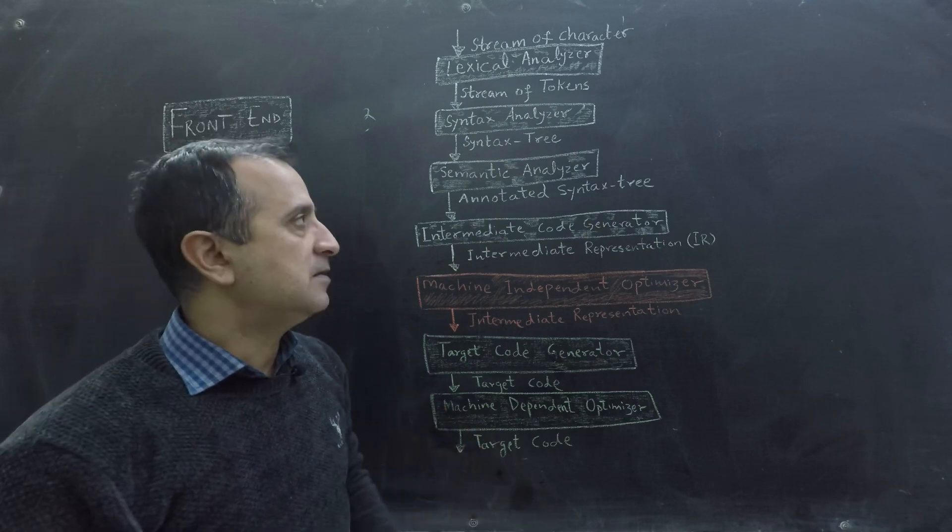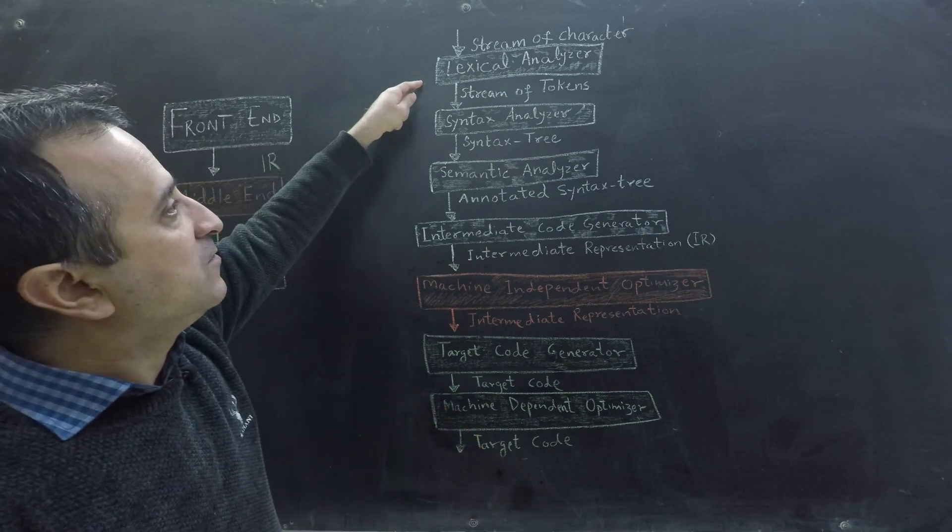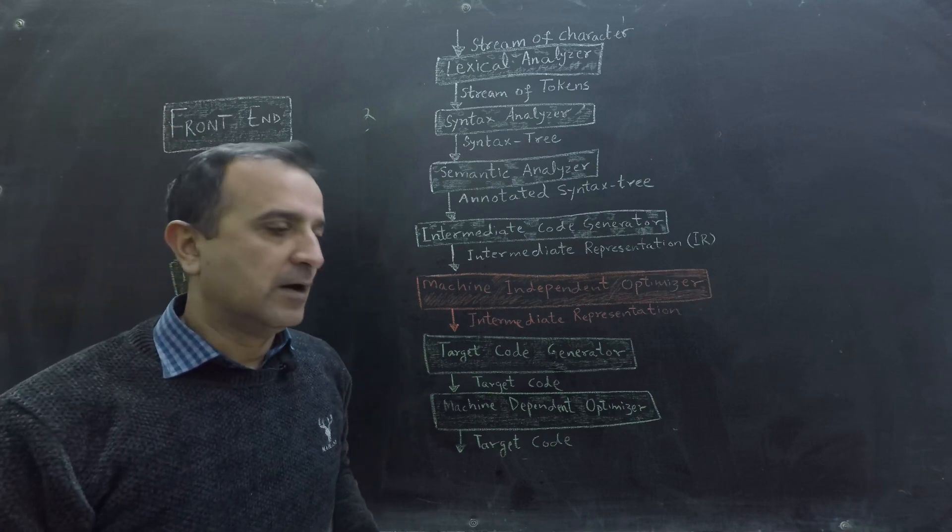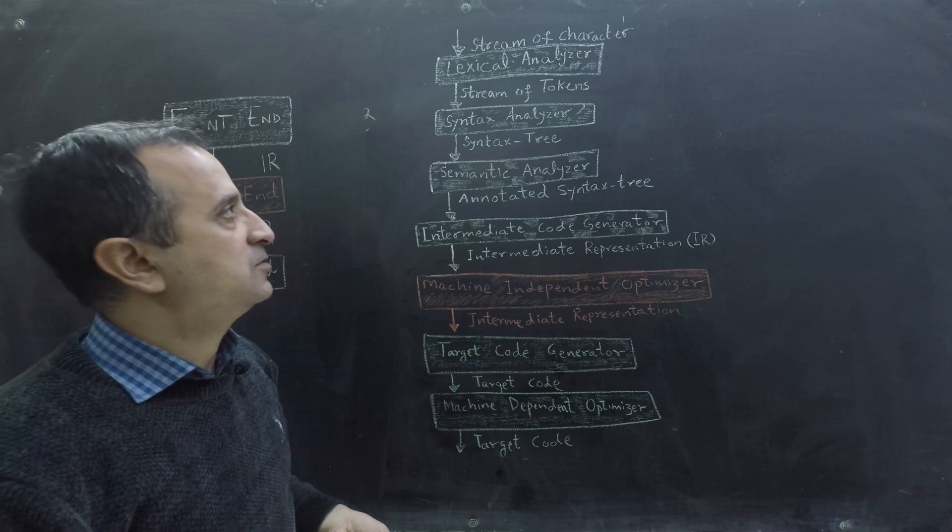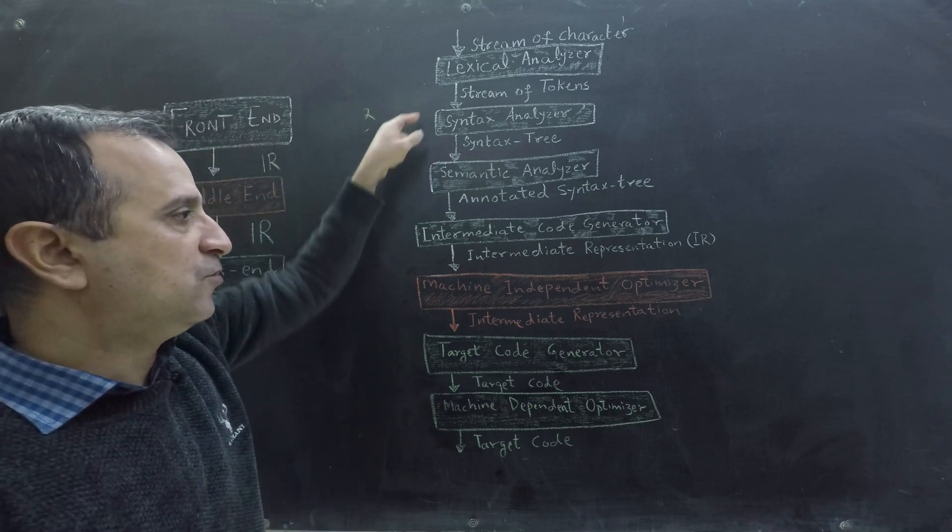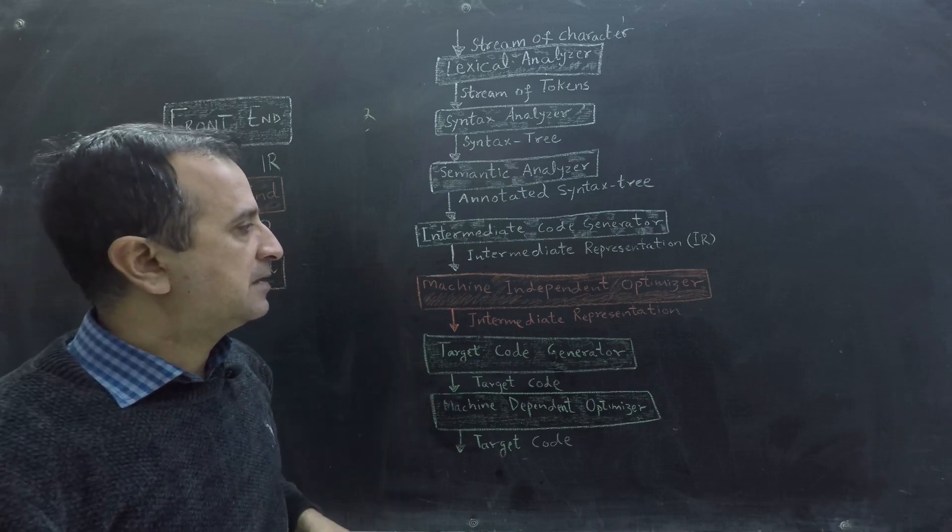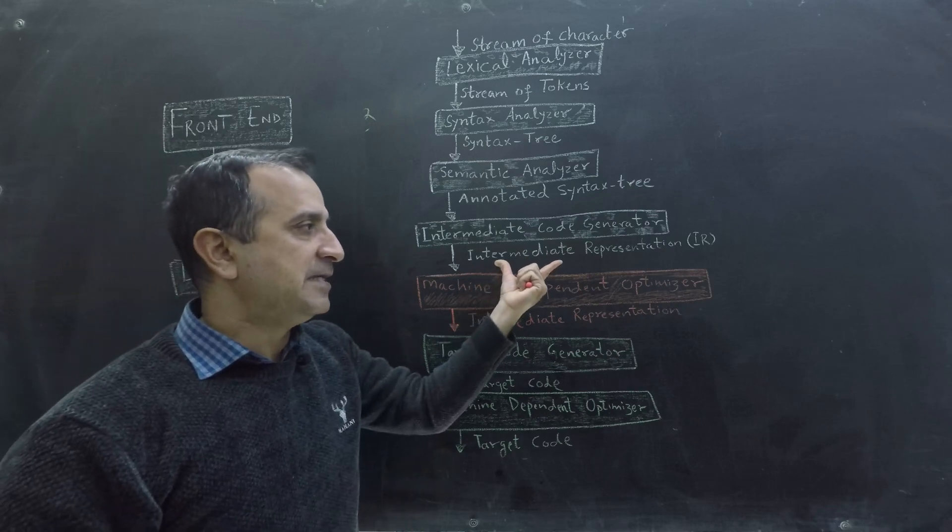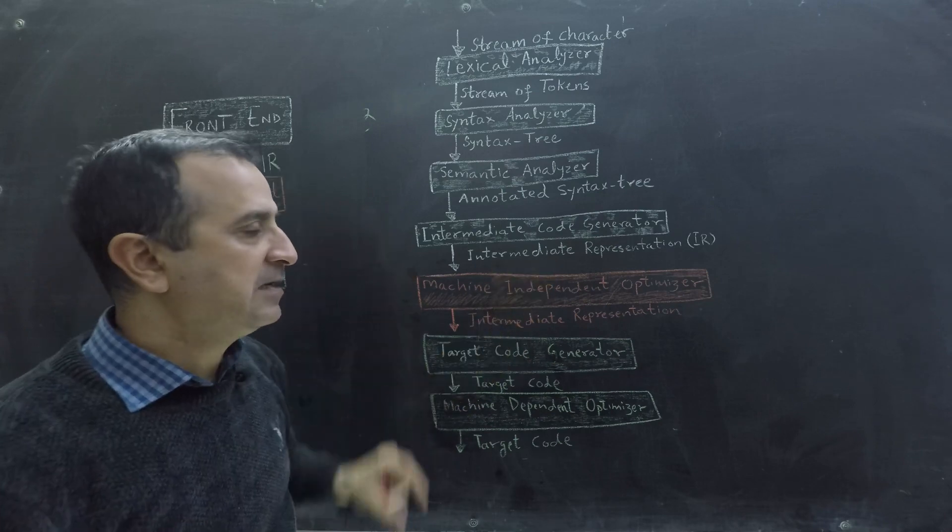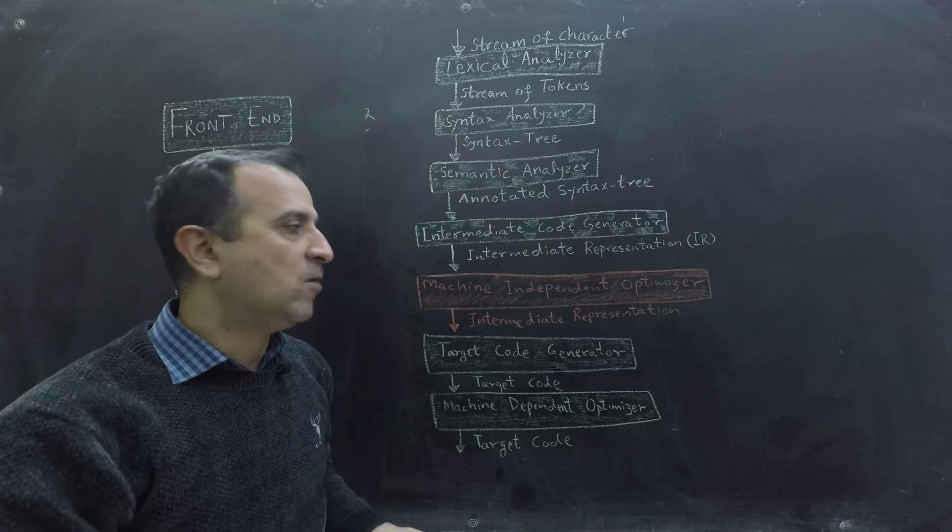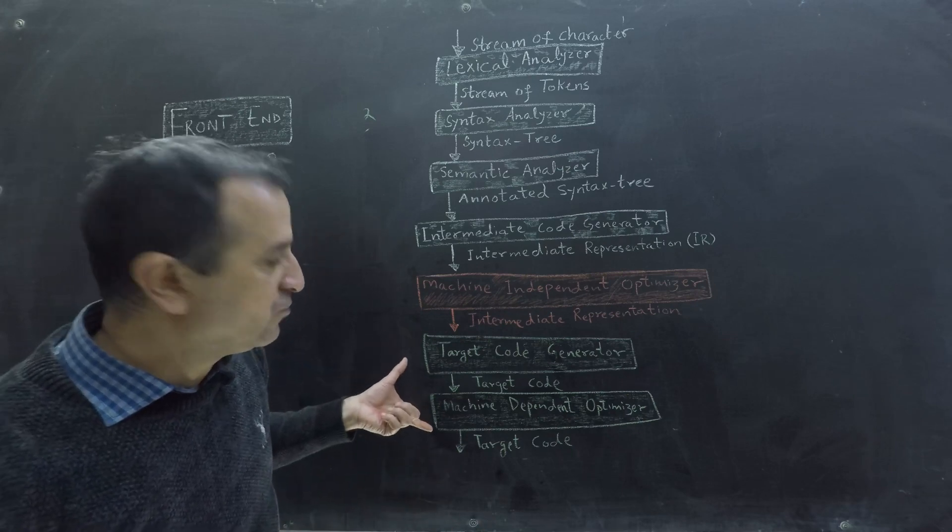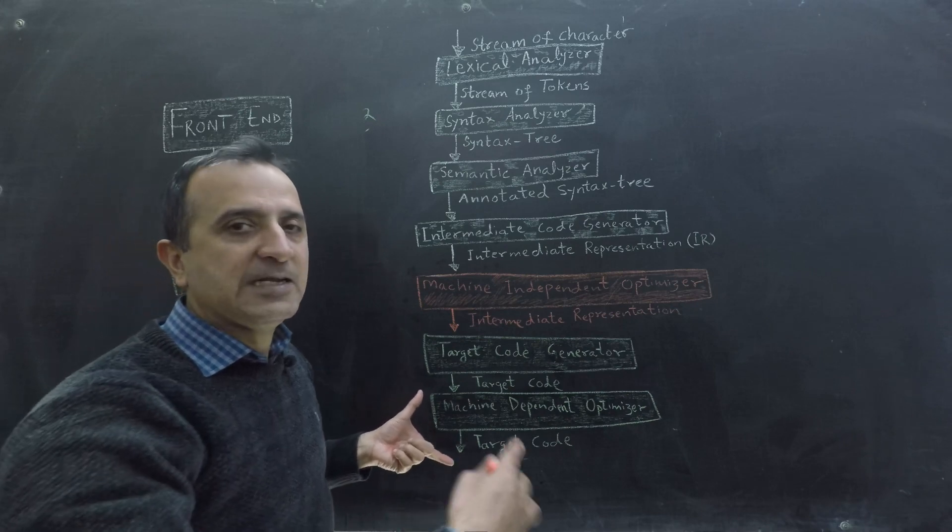Now in this video we will learn that these first four phases depend upon programming language that we are developing. So if we have a new programming language we must write these four phases for that language. If our intermediate representation is programming language independent then this phase has programming language independent optimizations and the last two phases are target machine dependent.